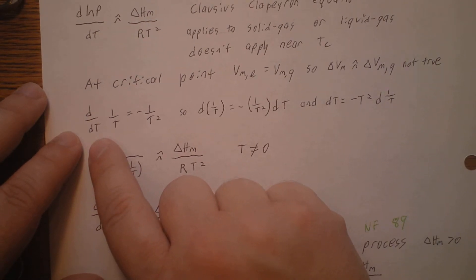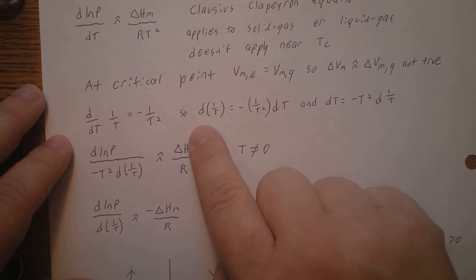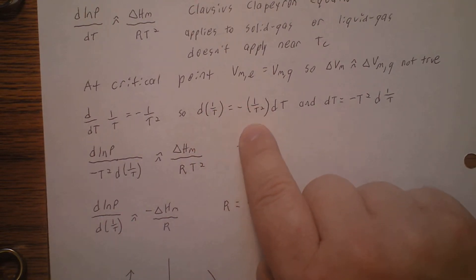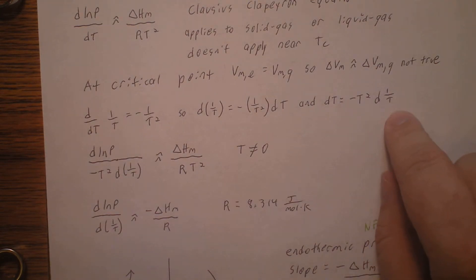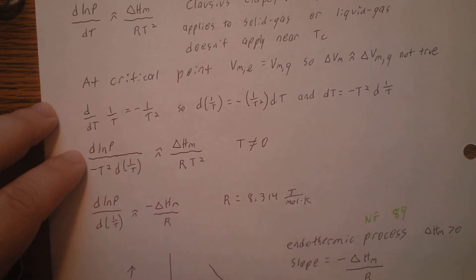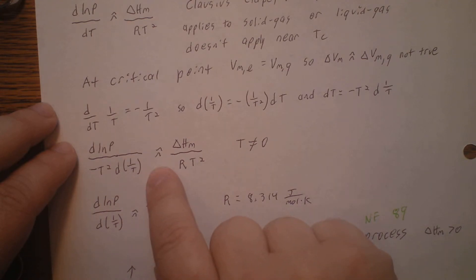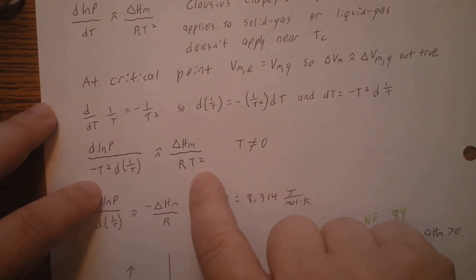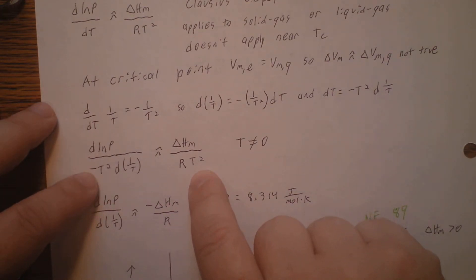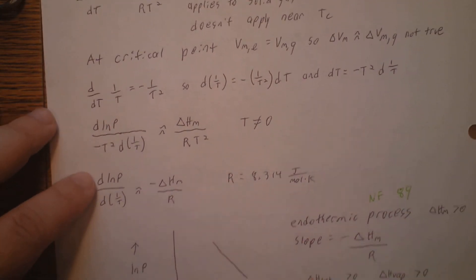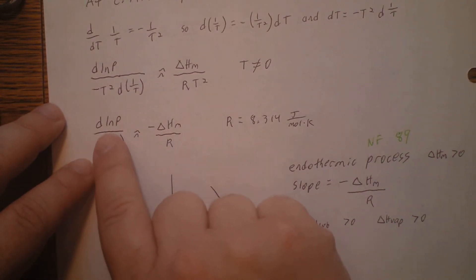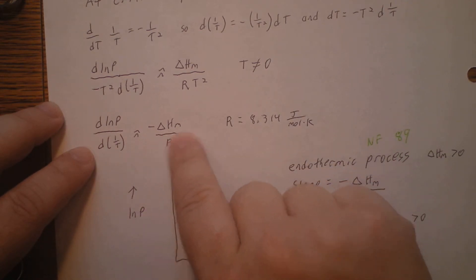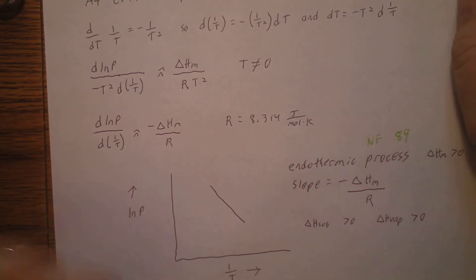Since d(1/T)/dT = −1/T², we have d(1/T) = −(1/T²) dT, and therefore dT = −T² d(1/T). Substituting in, d(ln P) ≈ (ΔHm / RT²)(−T² d(1/T)), and the T² terms cancel to give d(ln P)/d(1/T) ≈ −ΔHm / R, where R is the gas constant, 8.314 J mol⁻¹ K⁻¹.